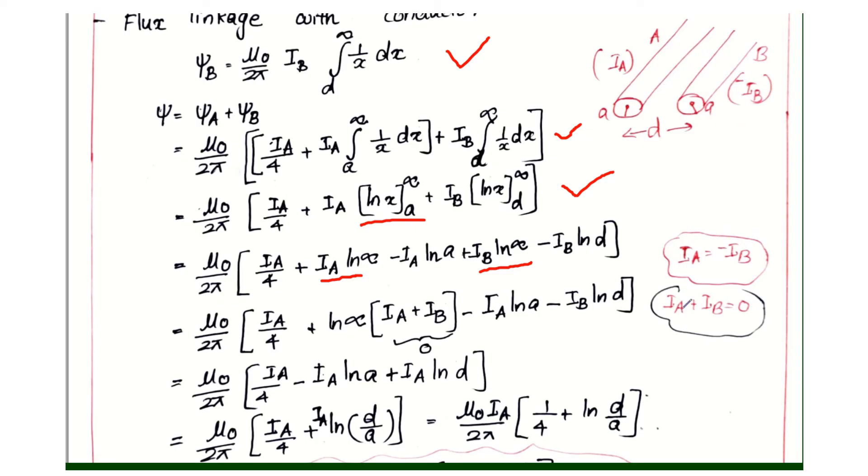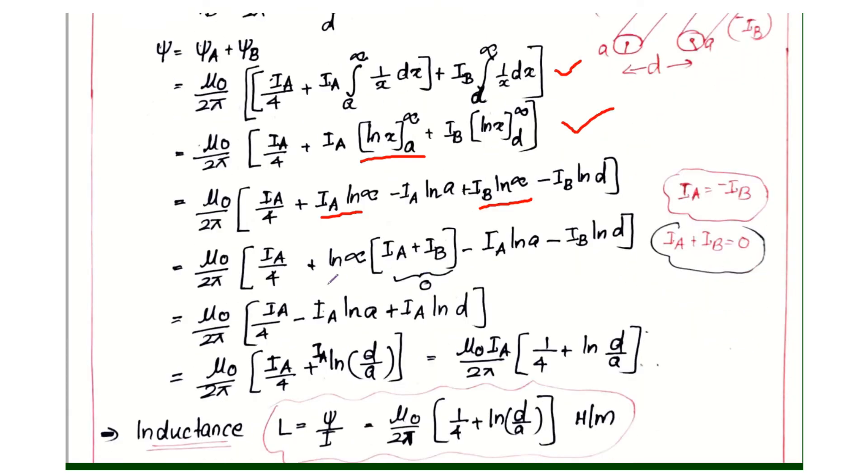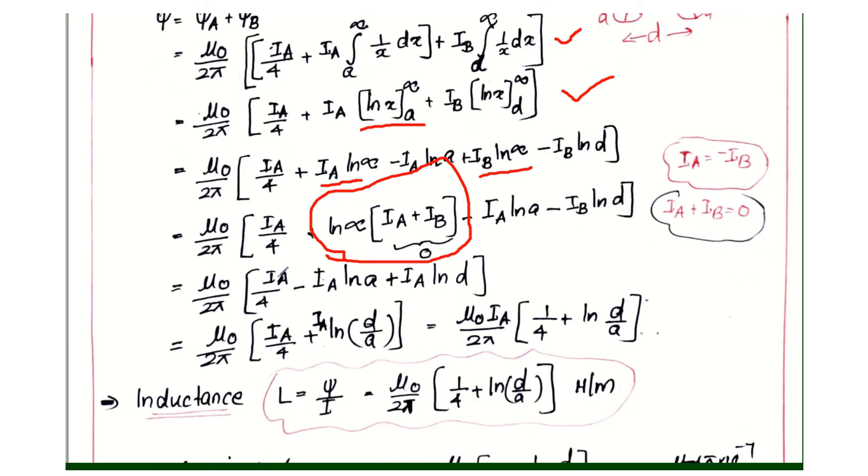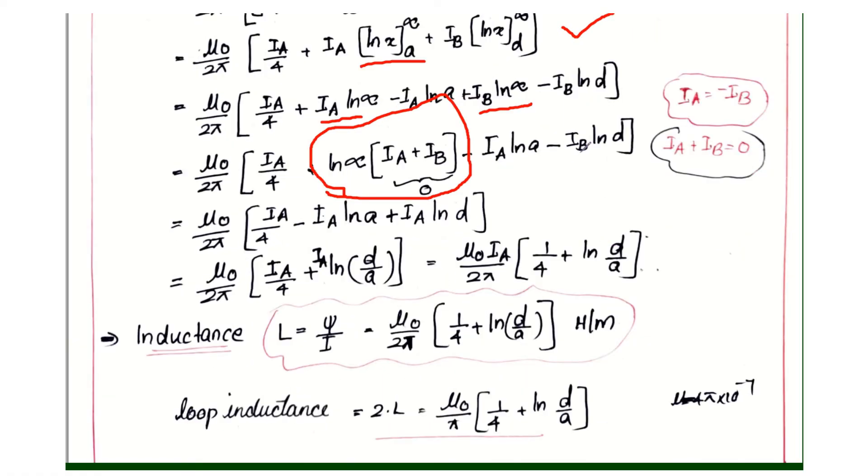Then we will write the term: μ₀/2π times IA by 4 minus IA ln a plus IB ln D.